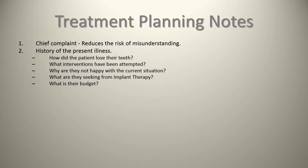Number two, you want to get a history of the present illness — basically, how did the patient lose their teeth? Those who cannot remember the history are condemned to repeat the mistakes made in that history. If the patient lost their teeth because they grind their teeth and you don't address this bruxism habit, it may become a problem later. Also, what interventions have been attempted? As Dr. George Zarb noted, if a patient comes in with a bag full of old dentures, you need to ask what hasn't been addressed in those past interventions.